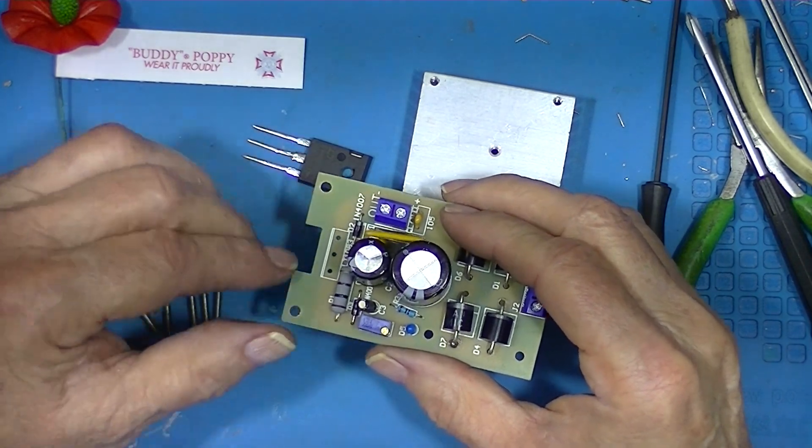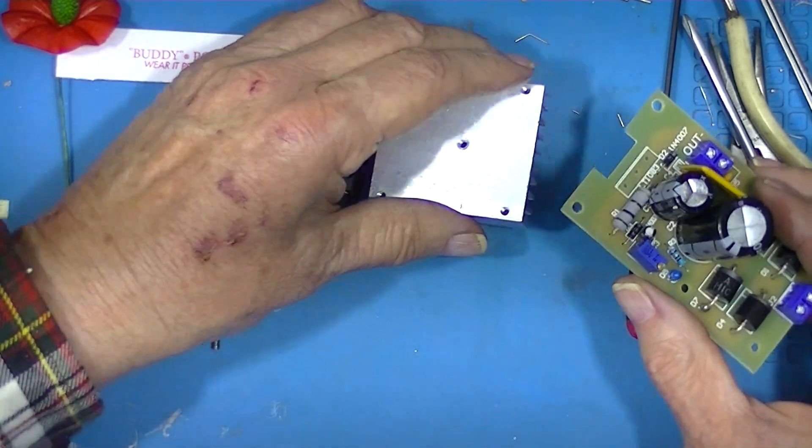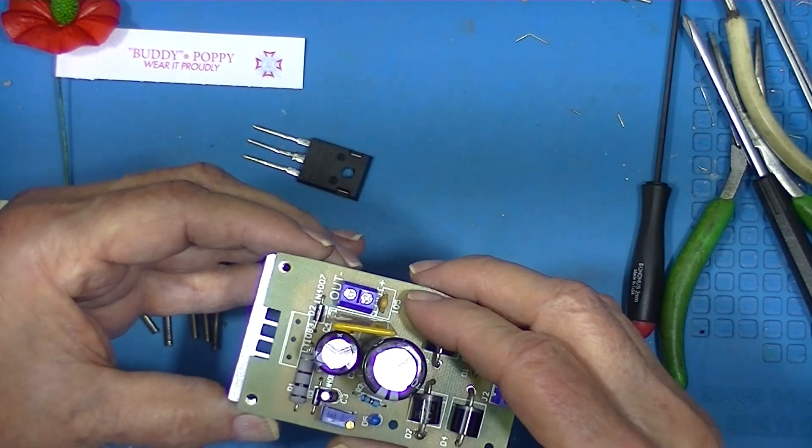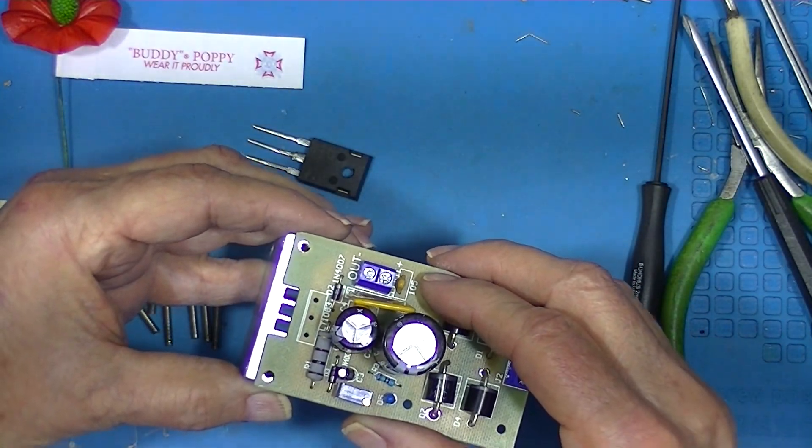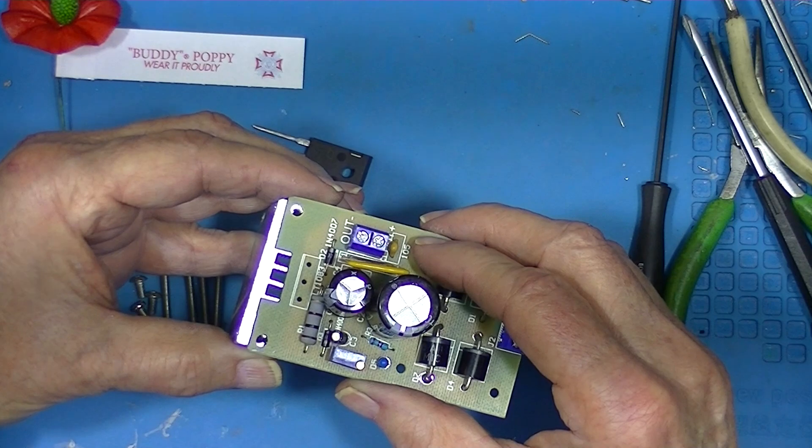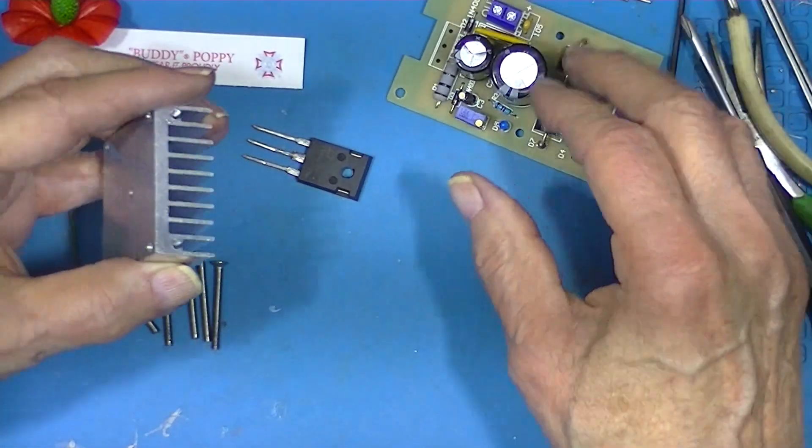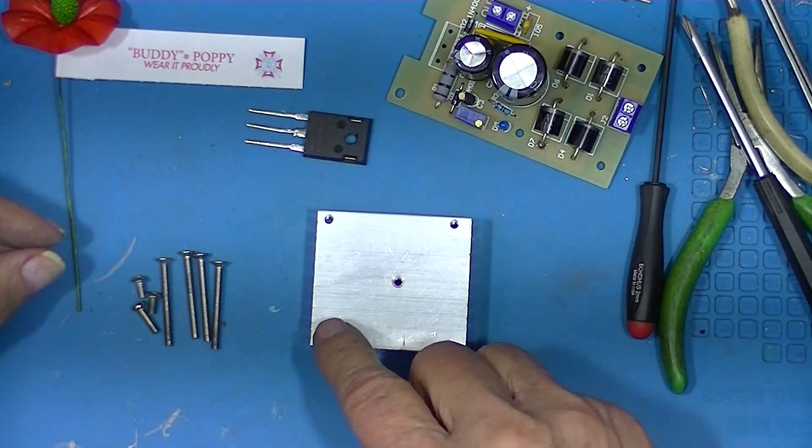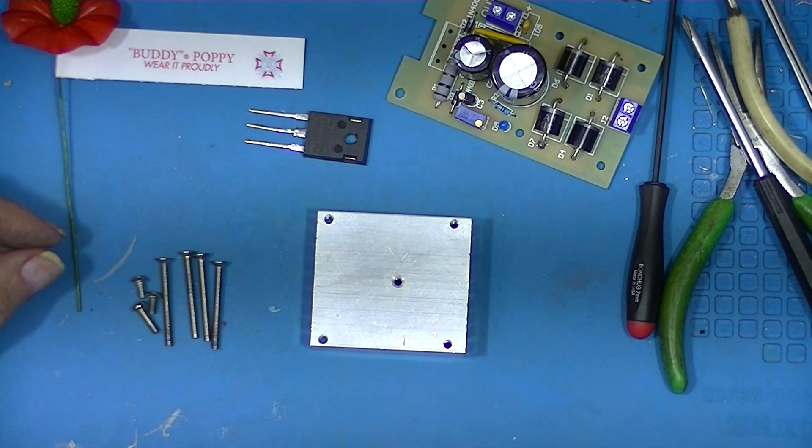I enlarged these holes a little bit hoping to better make connection with the tapped holes in the heat sink. And while I was there, I drilled and tapped four M3 holes.